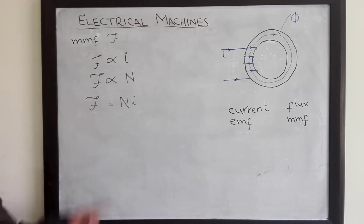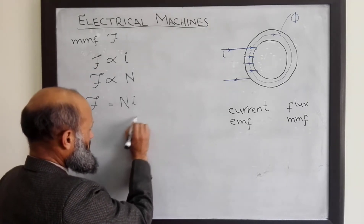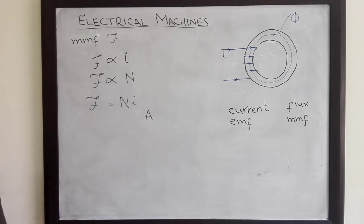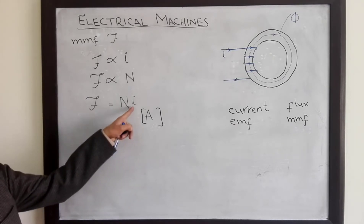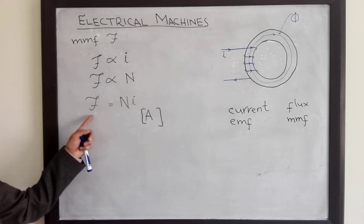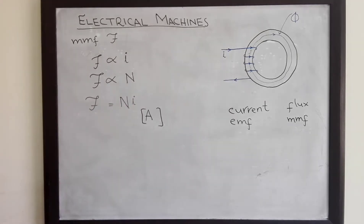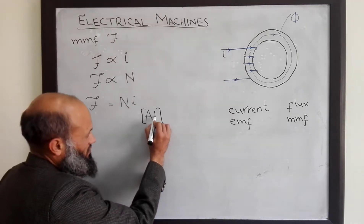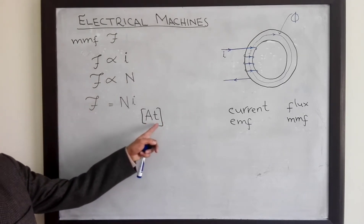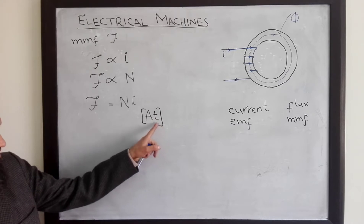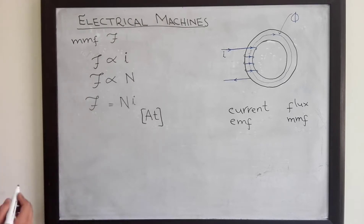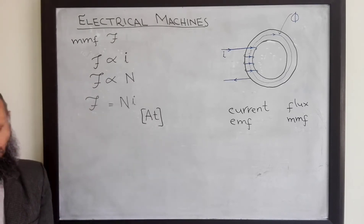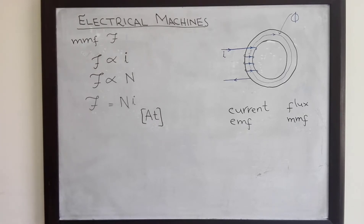What are the units for this MMF? Units of current is ampere, and the number of turns is a unitless quantity. Therefore, the dimension of MMF is the same as the dimension of current. However, just to differentiate current and MMF, we append T here — that is, ampere turns. Number of turns is a dimensionless quantity, so units of MMF is ampere turns, the same as ampere, just this notation to differentiate it from current.